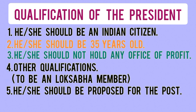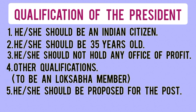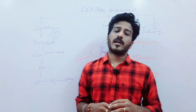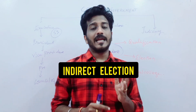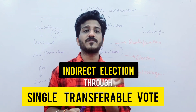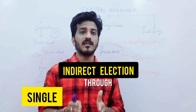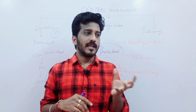The first four qualifications are very important. Now, how does the president get elected? It is an indirect election — specifically, a single transferable vote system.